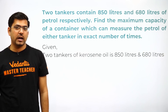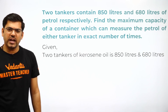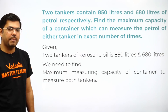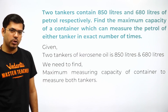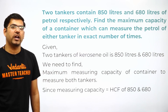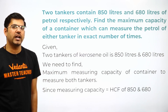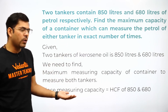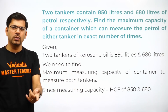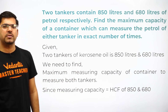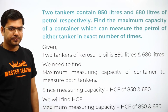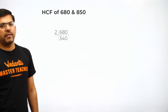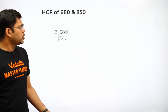Now that we know HCF is required: two tankers of 850 liters and 680 liters — we need to find the maximum measuring capacity of the container to measure both tankers. Hence HCF of 850 and 680 is required. Since the question does not specify Euclid's division or long division, it's up to you. The easiest method is the long division method, so I have done it using that.